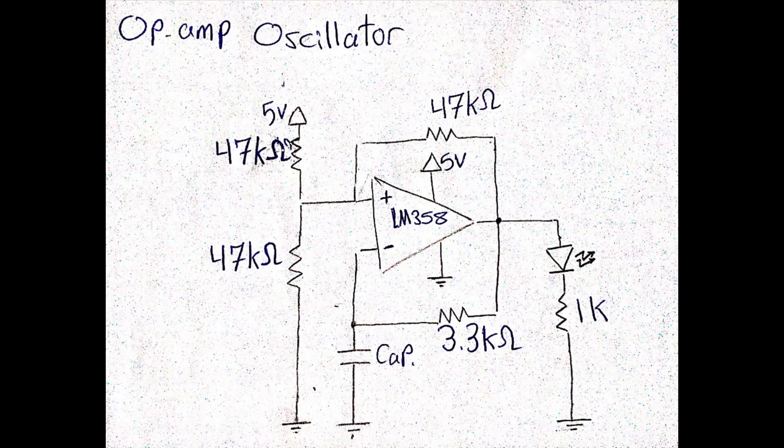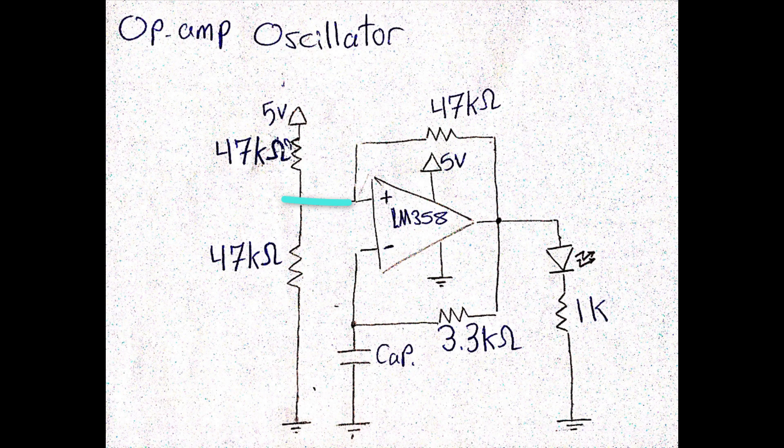Now it's time to understand how this oscillator works. At first look at this circuit, we can notice that the non-inverting input of the op-amp is connected to a voltage divider, and the inverting input is connected to a capacitor.